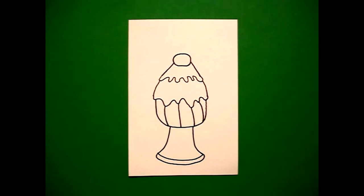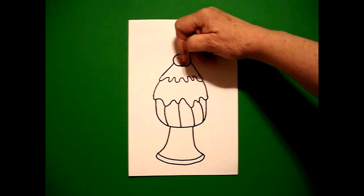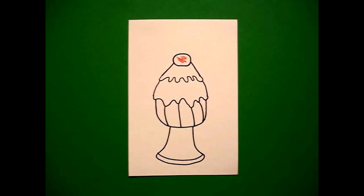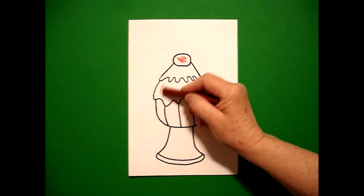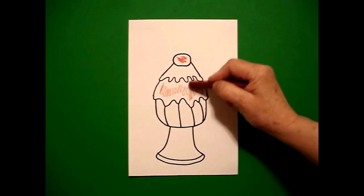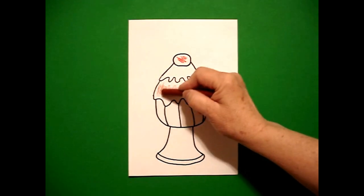Okay, let's see how we're going to color this in. For my cherry on top, I'm going to make this red. I'm going to leave that white because that's my whipped cream. This is my ice cream, so I'm making it chocolate, but you can make it any flavor and any color that you want.